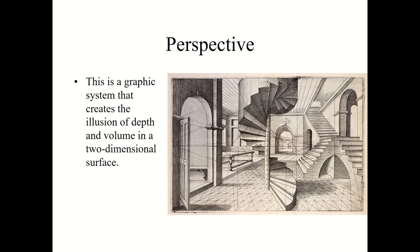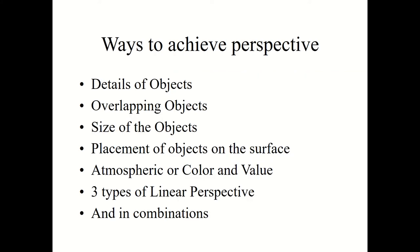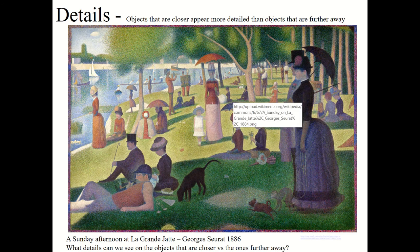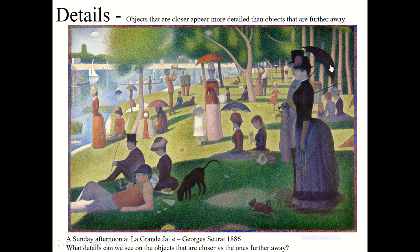Perspective is a graphic system that creates the illusion of depth and volume on a two-dimensional surface. We already talked about ways to achieve perspective and these can be used in combination. First, the details — this is Sunday on La Grande Jatte by Georges Seurat. Objects closer to us tend to have more details like the woman right here, but objects further in the distance tend to have less. This work was created with pointillism, a system where dots create the artwork. It took Seurat about six years to make, and you can find it at the Art Institute in Chicago, Illinois.